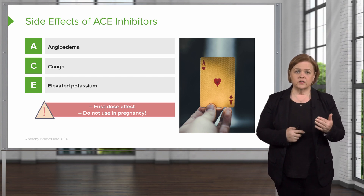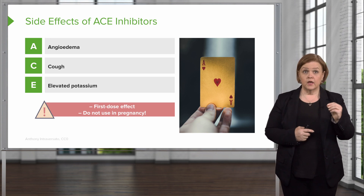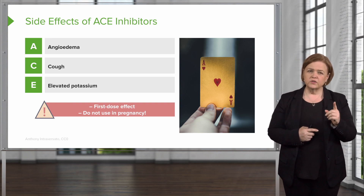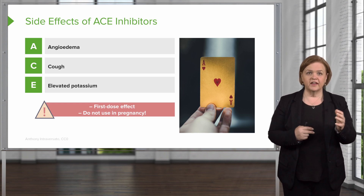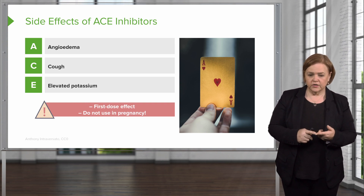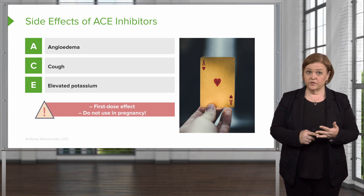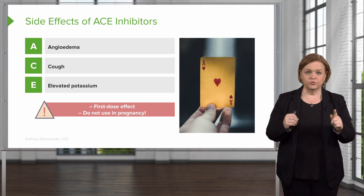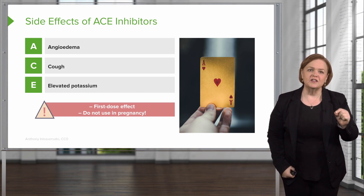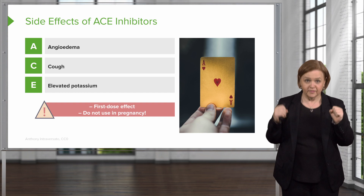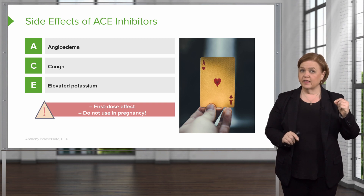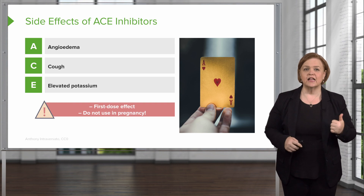There's also a first dose effect, and we don't want to use these meds in pregnancy — ACE inhibitors are a no go. Don't use them in pregnant patients. First dose effect means they're going to have a precipitous drop in blood pressure. Whenever you see a test question that talks about the initial or first dose, particularly if it's a blood pressure medication, that's what you're worried about — that really big drop in blood pressure. Remember: repetition is your friend. First dose effect is a big drop in blood pressure. We don't give these to pregnant women. And the three main side effects spell out ACE: angioedema, cough, and elevated potassium.